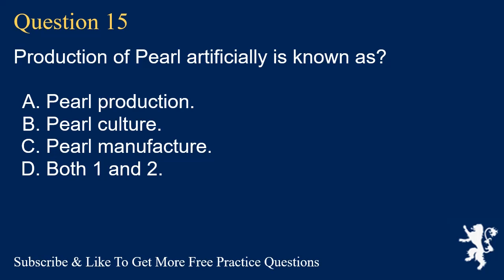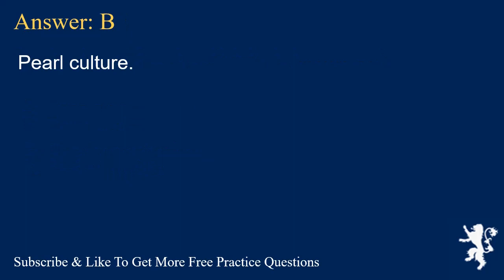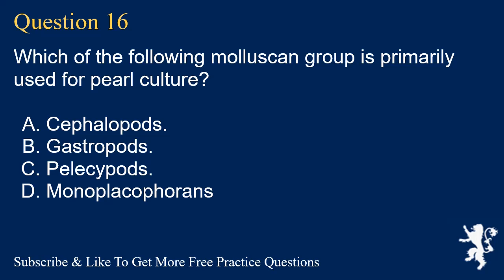Question 15. Production of pearl artificially is known as? A. Pearl production. B. Pearl culture. C. Pearl manufacture. D. Both 1 and 2. Answer: B. Pearl culture.